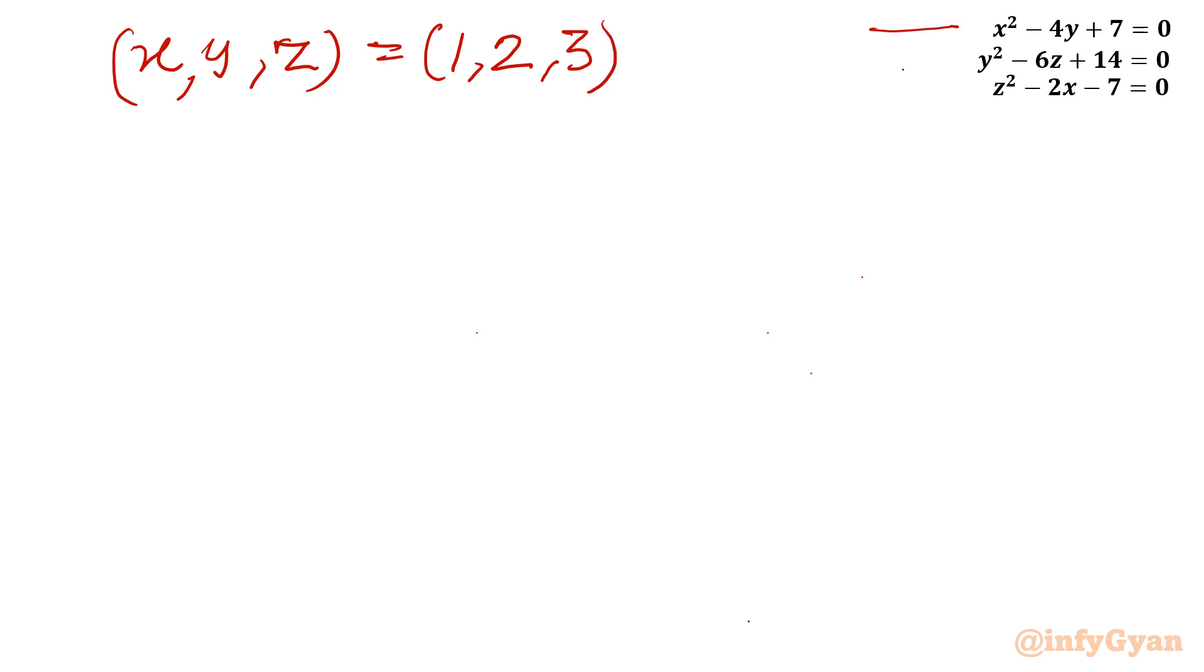This is our equation number 1, equation number 2, and equation number 3. Let us put and cross check equation number 1. I will write LHS and verify through RHS. So equation 1: x² - 4y, so x² will be 1² minus 4 times 2 plus 7. It should match with RHS 0. 1 - 8 + 7, so this is -7 + 7, so it is 0 which is our RHS.